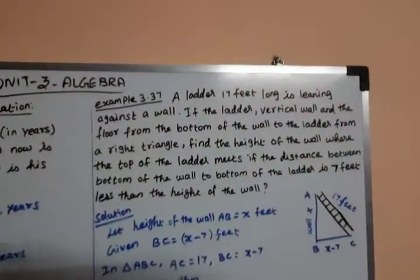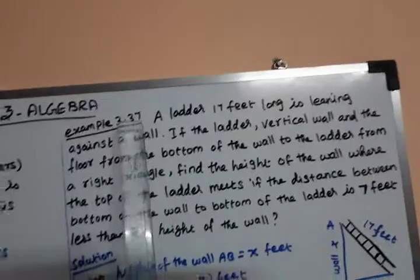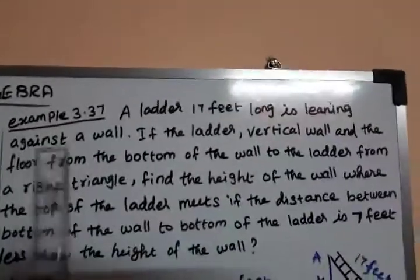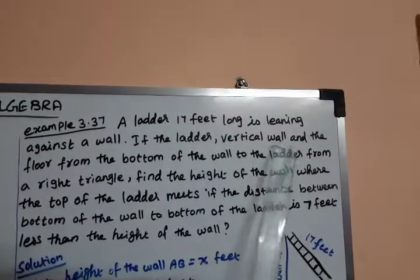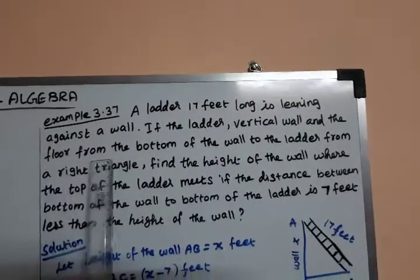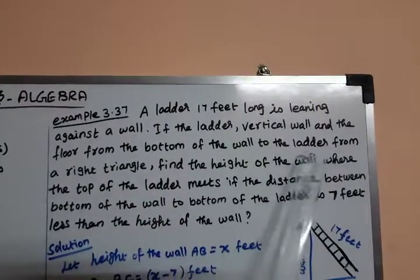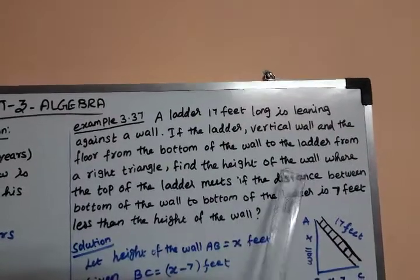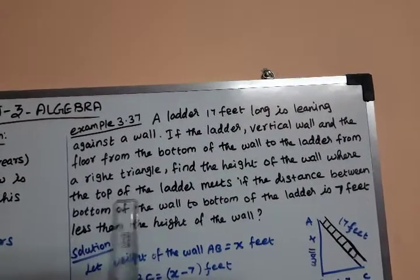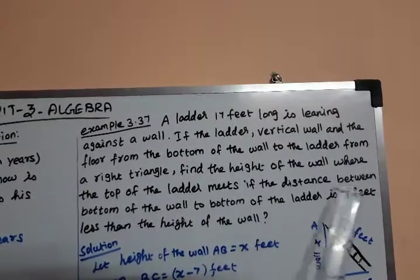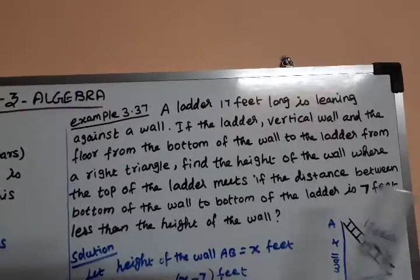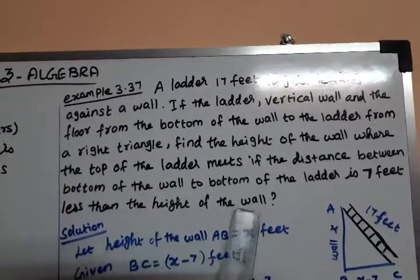Next, Example 3.37: A ladder 17 feet long is leaning against a wall. Find the height of the wall where the top of the ladder meets, if the distance from the bottom of the wall to the bottom of the ladder is 7 feet less than the height of the wall.